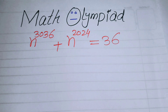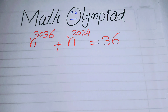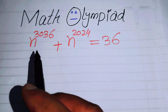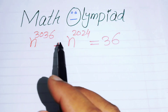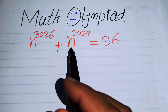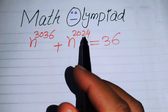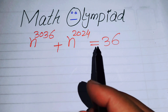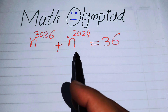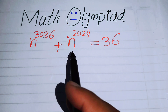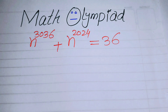Hello everyone, welcome back to the Map of Mathematics. In this video we are going to solve this algebra problem: n to the power of 3036 plus n to the power of 2024 equals 36. We will solve this problem for the real values of n.